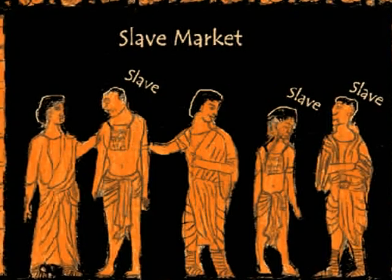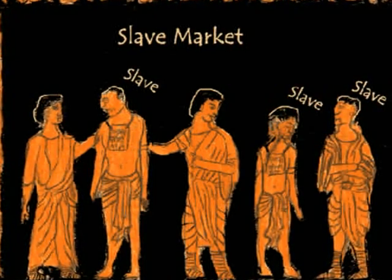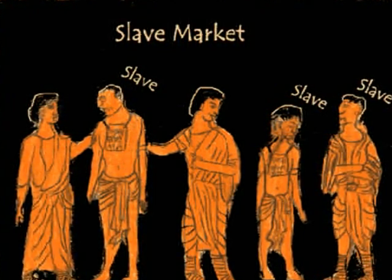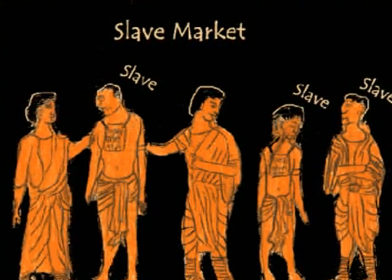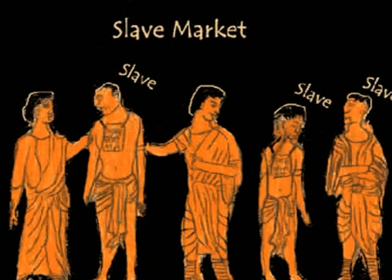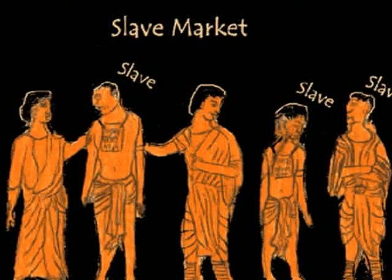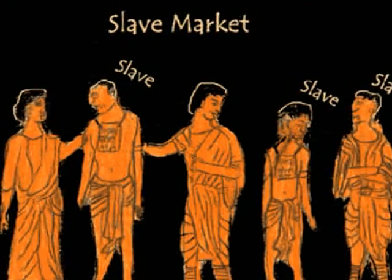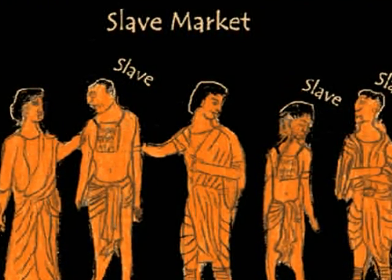A slave could be made a couple of different ways. They might have been prisoners of war and forced into slavery by the enemy, or they might have been born into slavery by slave parents. They were then sold on the slave market to the highest bidder.